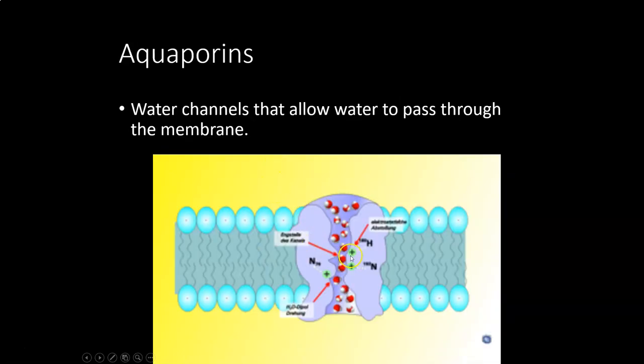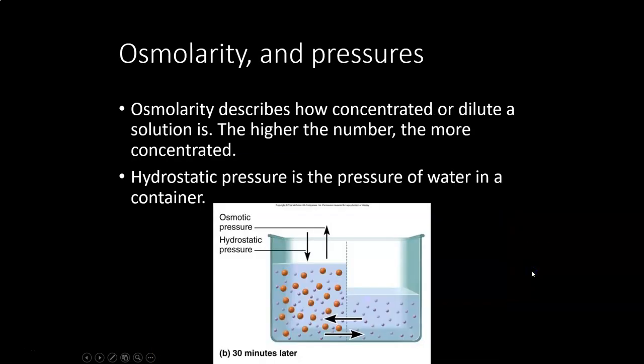Aquaporins are channel proteins that help water get in and out of a cell depending on what the cell needs. Osmolarity describes the concentration of a solution: a highly concentrated solution has high osmolarity, while a dilute solution has low osmolarity.